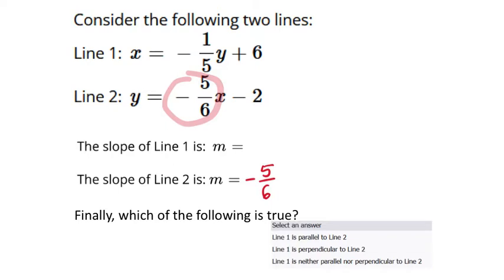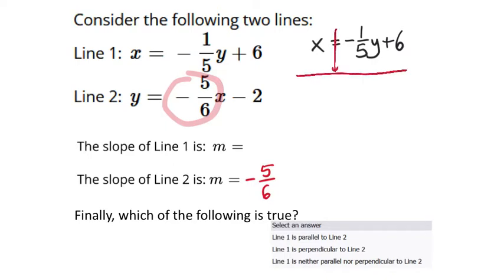Taking the equation x equals negative 1 fifth y plus 6, I'm going to isolate the y. Subtracting 6 from both sides — I'm offsetting the x and minus 6 because they're not like terms. That gives x minus 6 equals negative 1 fifth y.